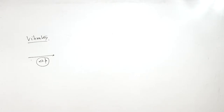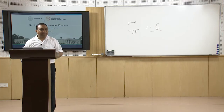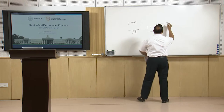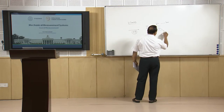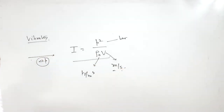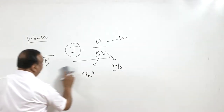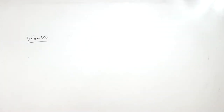The intensity of sound waves is given by I = p² / (ρ₀ × v), where p is the pressure of the sound wave in bar, ρ₀ is the density of the medium in kg/m³, and v is the velocity of sound in m/s. There is also a pressure pulse phenomenon related to variation in pressure and variation in the intensity of the sound.